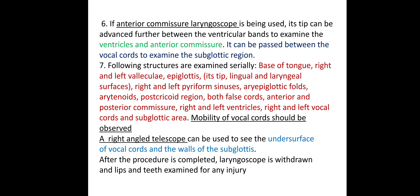Further structures examined include the post-cricoid region, both false cords, anterior and posterior commissure, right and left ventricles, right and left vocal cords, and the subglottic area. Mobility of the vocal cords should be observed. A right-angle telescope can be used to see the undersurface of the vocal cords and walls of the subglottis.